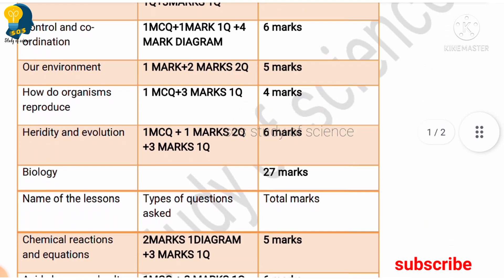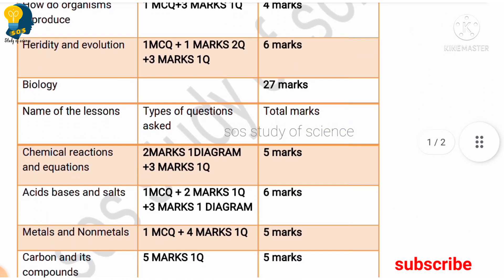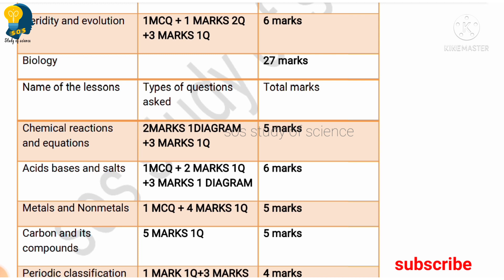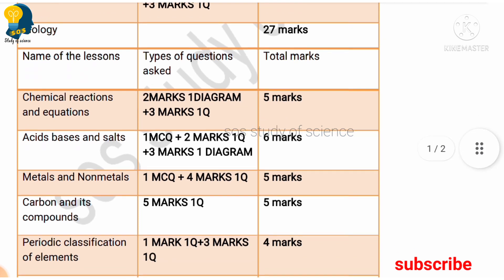Moving to Chemistry. The first lesson in Chemistry is Chemical Reactions and Equations — they have allotted five marks. In these five marks, there is one two-mark diagram question and one three-mark question, so totally five marks for Chemical Reactions and Equations.